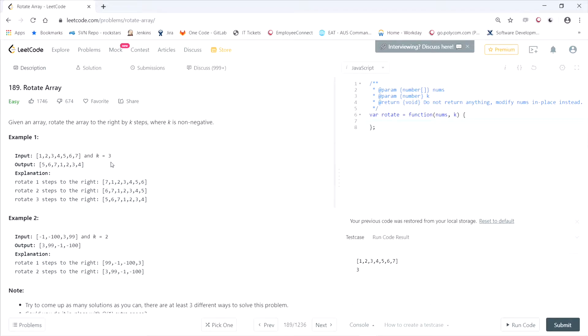So basically 7 would go in the front of this array, 6 would go in the front of that, and 5 would go in the front of that. So the output would be 5, 6, 7, 1, 2, 3, 4.